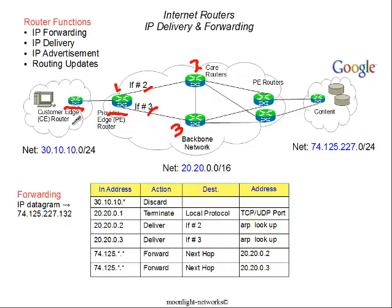When a packet arrives from the customer edge — in this case an IP datagram packet with that destination address — the source address is important in this particular case. The edge router that receives the packet will consult a routing table, which I've made up for illustration purposes. When the packet comes into router number one, it'll make decisions along the following lines. First, if the incoming packet has an address that is the same or in the network field of the customer edge, it's going to be discarded because a packet would not be sent back on the same link it was received on.